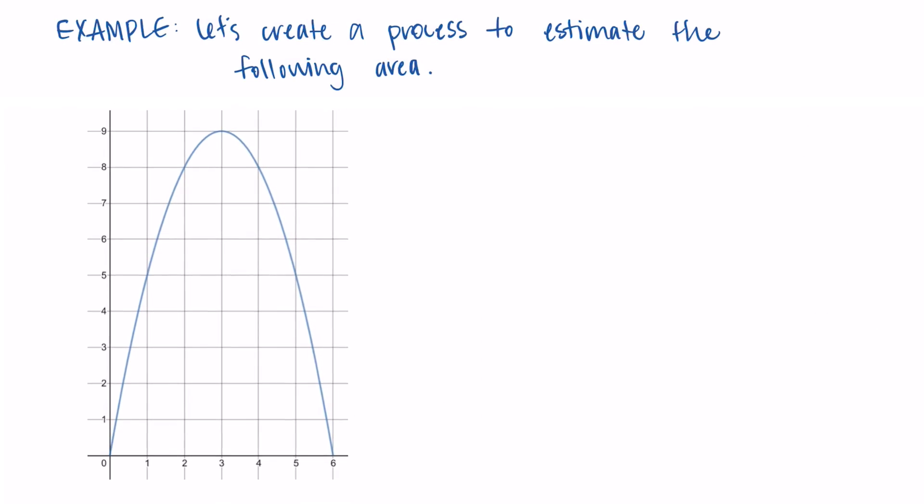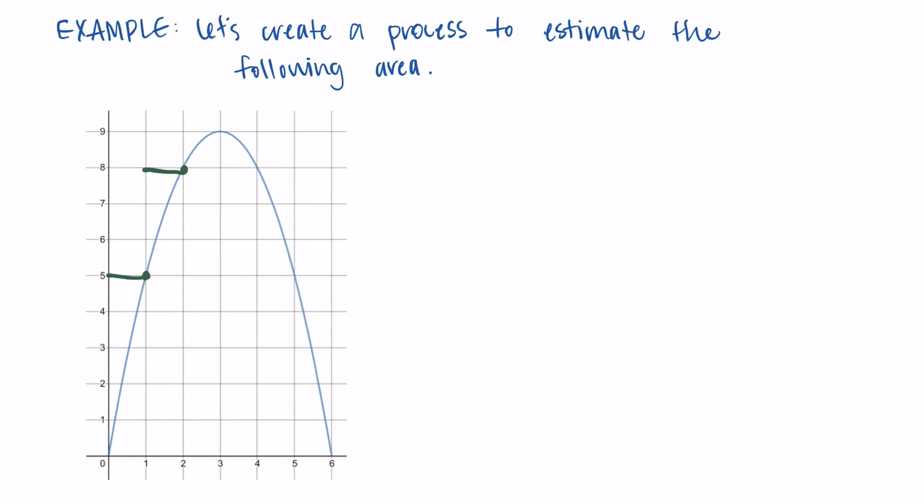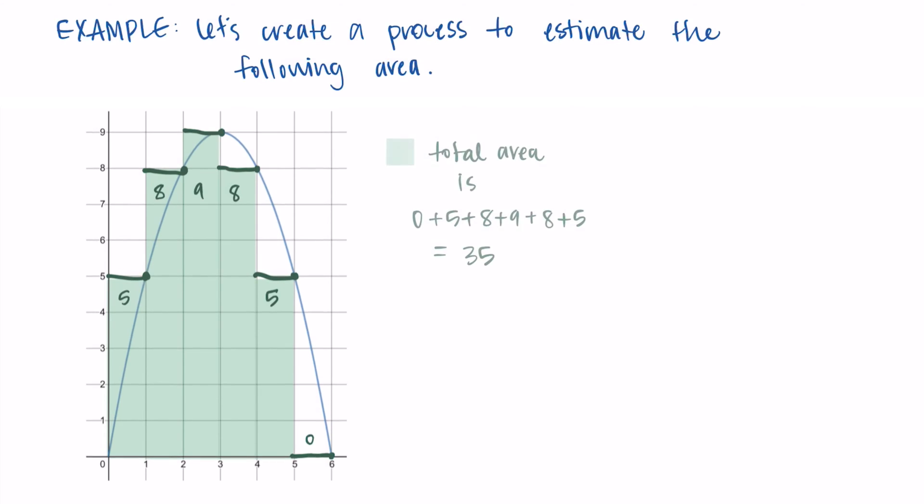So here I'm going to take the right points of each of the intervals. So I'm starting at 1 and I'm finding that height, and then 2 through 6, and those points now become the height of my rectangles. Now this actually turns out to give the same value in this particular example because it's symmetric. So we still have 5, 8, 9, 8, and 5 as our rectangle areas. Oh, and that 0, that one counts too. When we sum them up, we get 35 again. But this is a right Riemann sum with six rectangles since it's using the right end points of each of the smaller intervals to find the height.